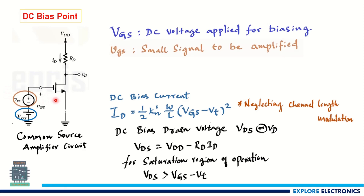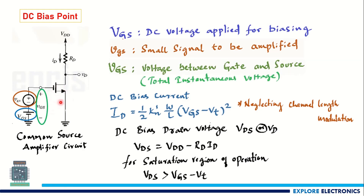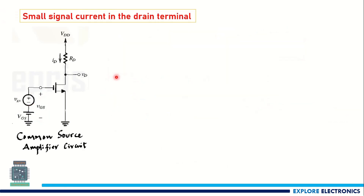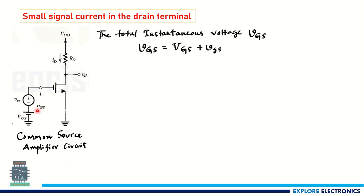The small letter vgs is the small signal we are applying to be amplified — this is the AC input signal. The notation small v, capital GS represents the instantaneous voltage between the gate and source terminal, combining the DC voltage VGS and the small signal vgs. So the total instantaneous voltage between gate and source is VGS = VGS (DC) + vgs (AC).